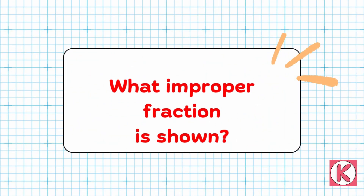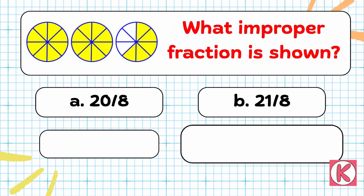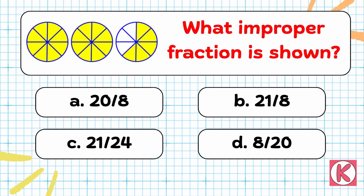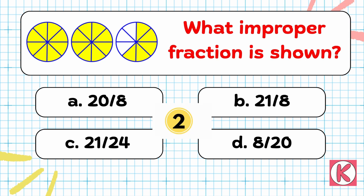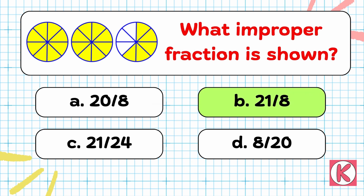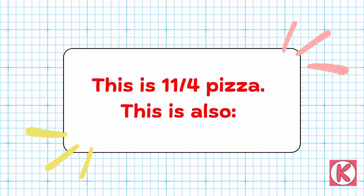Next question. What improper fraction is shown? The right answer is Option B — 21 by 8.